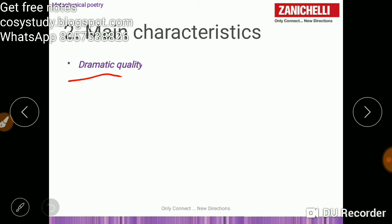So first was conceit, second was unusual images they took, third is paradox, and fourth one is dramatic quality.